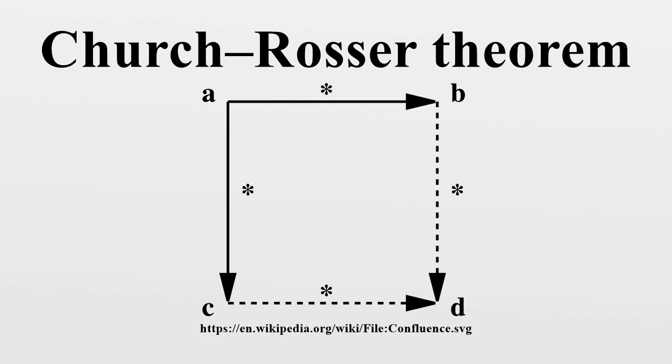In older research papers, a rewriting system is said to be Church-Rosser, or to have the Church-Rosser property, when it is confluent.